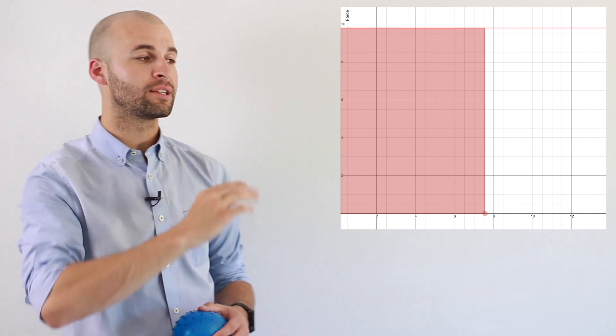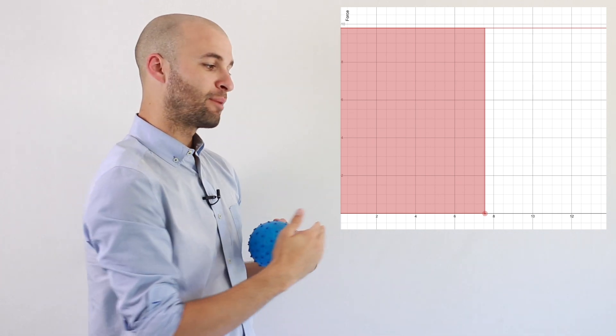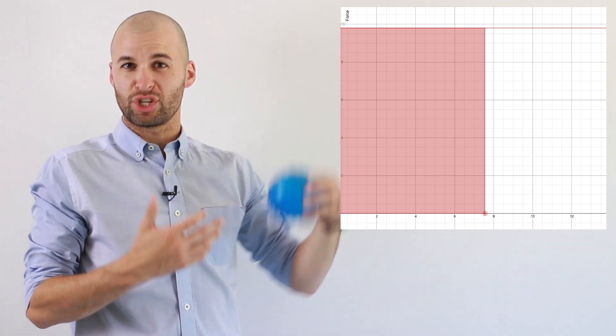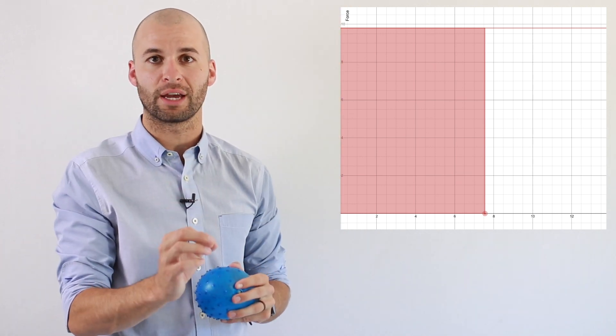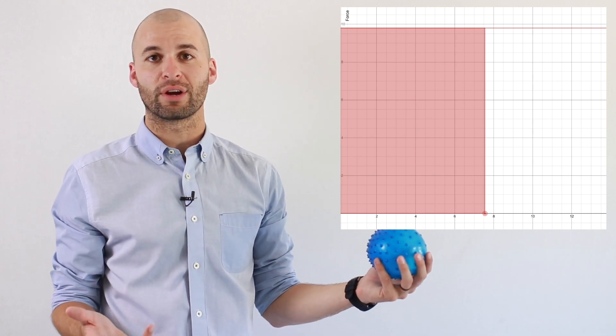If I do that, that would be the force that I applied—the weight—times the displacement that we had, or the height that we lifted it, or the change in height, just the displacement that the force was applied. Doing that, we get a nice rectangle that we can take the area of.